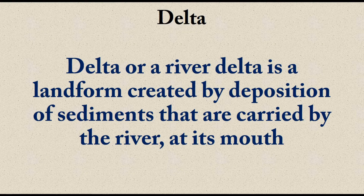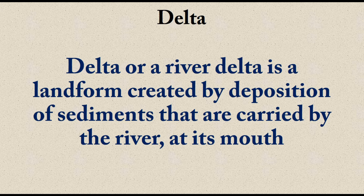A delta, or river delta, is a landform created by deposition of sediments carried by the river at its mouth. When a river flows through different stages, it undergoes many activities. In the first stage, active vertical erosion takes place. In the second stage, valley widening and sideways erosion occur. Through all these stages, the river takes a lot of sediments downstream.